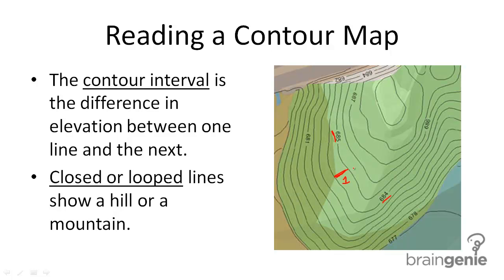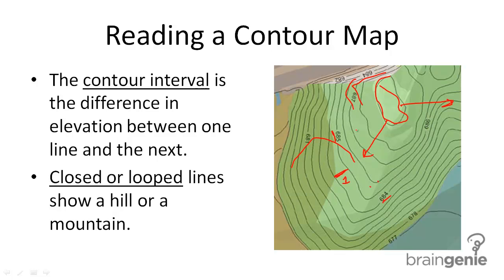Closed or looped lines show a hill or a mountain. This looped line represented by each of these lines is actually a loop — it's going to show you a mountain. Think of it as an aerial view. If you were looking at this from above, each of these lines would be going down, because we went from 284, 285, 286, all the way up. So closed or looped lines are going to show a hill or a mountain.